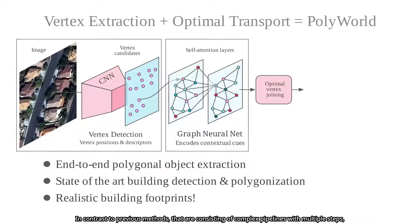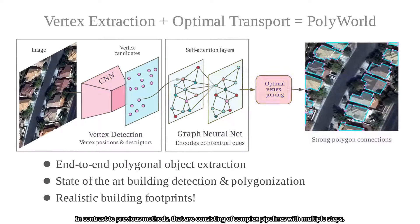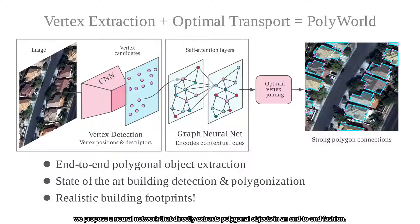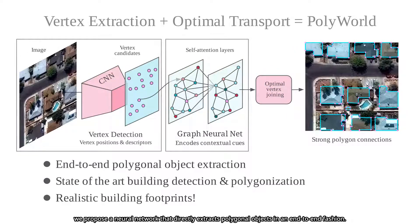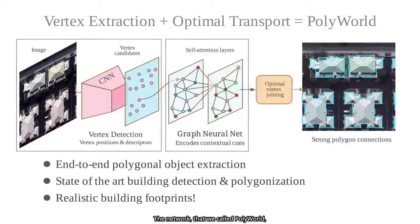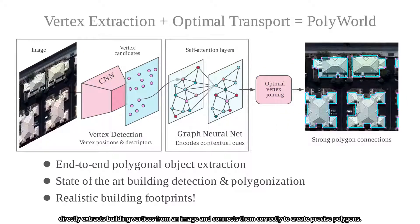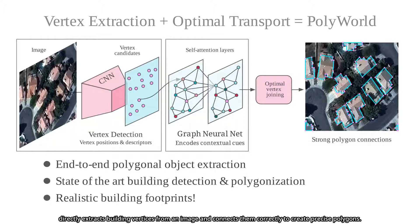In contrast to previous methods consisting of complex pipelines with multiple steps, we propose a neural network that directly extracts polygonal objects in an end-to-end fashion. The network, which we call PolyWorld, directly extracts building vertices from an image and connects them correctly to create precise polygons.